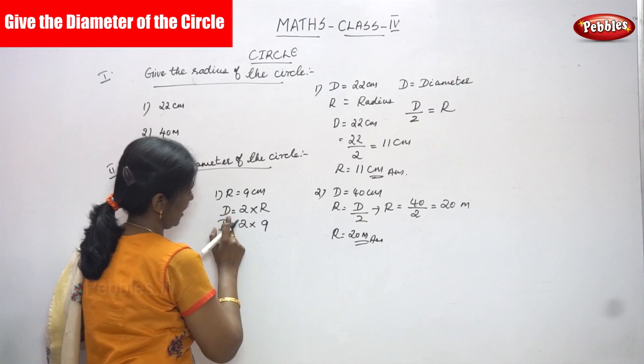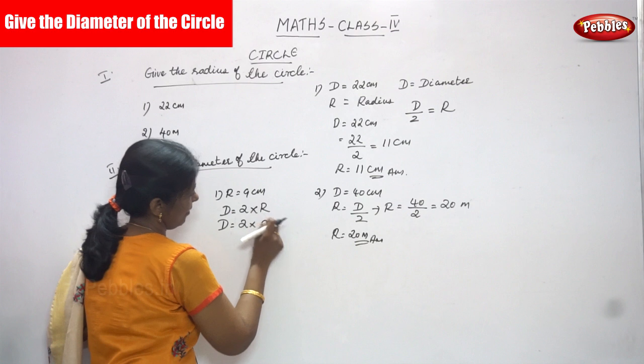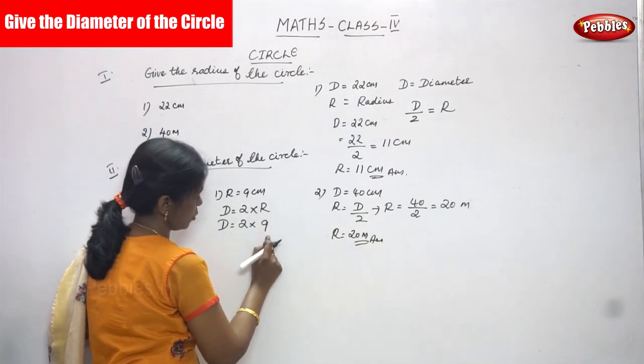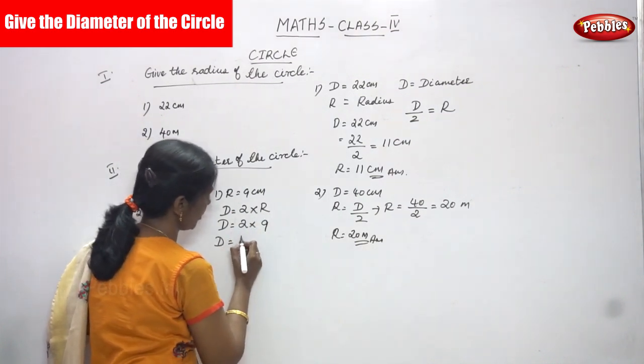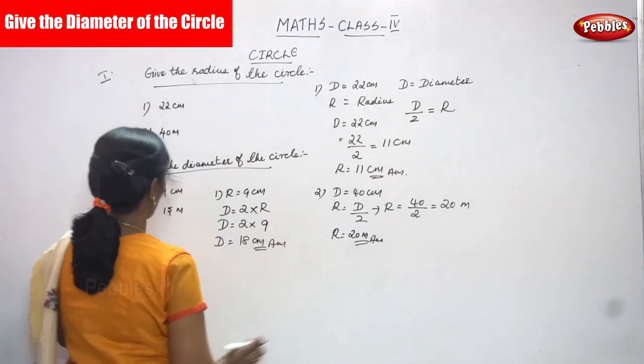Now we are going to find out diameter. So d is equal to 2 into r, that means d is equal to 2 into the value of r. That means 9 you have to substitute here. So d is equal to 2 into 9. You can get 18 centimeter, which is the right answer for the question.